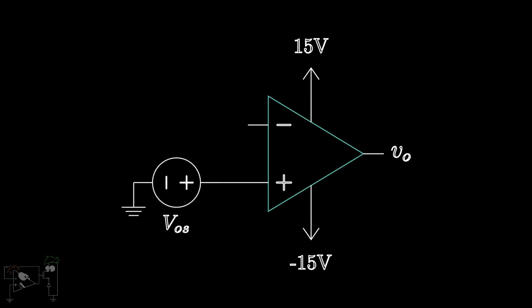As input-offsets are arbitrary, we cannot determine their polarity beforehand. Hence, we can model the offset voltage at any terminal.